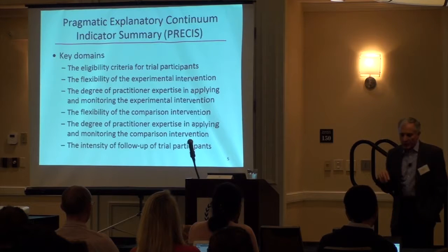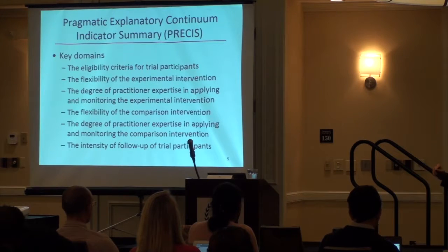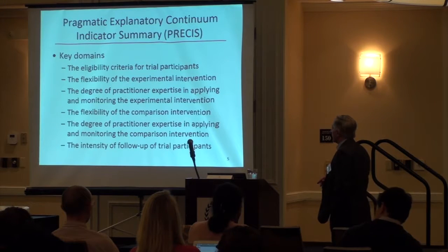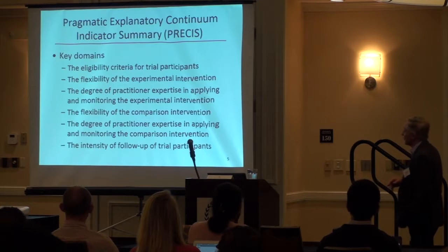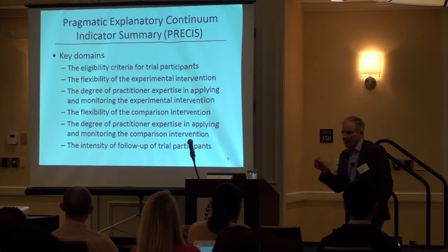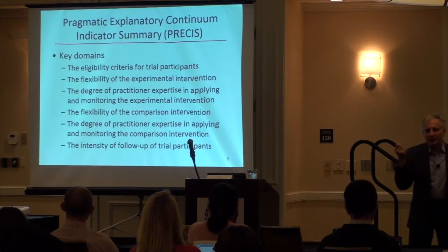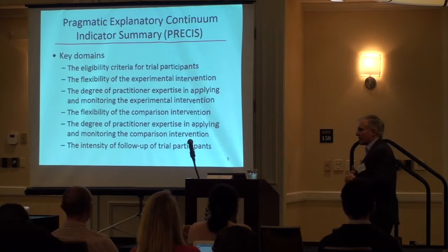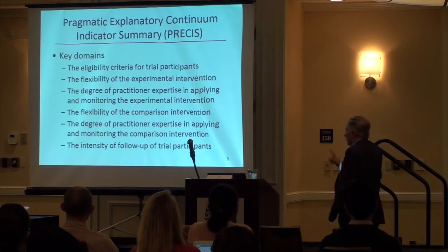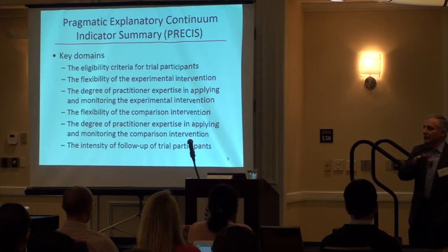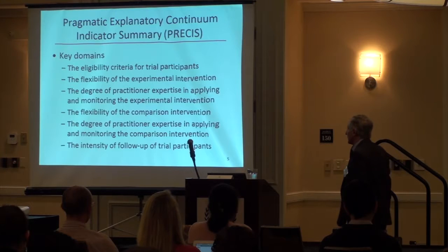There are two tools for scoring the degree to which a trial is pragmatic. The first, from 2009, is called the Pragmatic Explanatory Continuum Indicator Summary — PRECIS. It defines ten domains to think about. The decisions you make in each of these domains determine how pragmatic or explanatory your trial design is. I'm going to go through these domains now, then look at a particular trial example, and then try to reconsider that trial in these domains to illustrate how you define them.